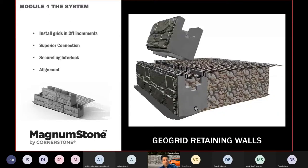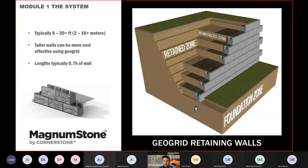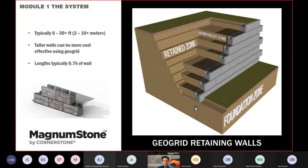For geogrid walls, you install in two-foot increments. The secure lug pinches the grid between the block and the hollow core, providing a superior connection. The grid goes in every 0.6 meters. Geogrid walls are typically six to thirty feet tall (two to ten meters and higher) and become more cost-effective as you get taller, as gravity walls become expensive for material cost at greater heights.